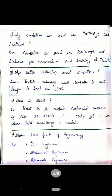Question F: Why are computers used in railways and airlines? Answer: Computers are used in railways and airlines for reservation and booking of tickets.